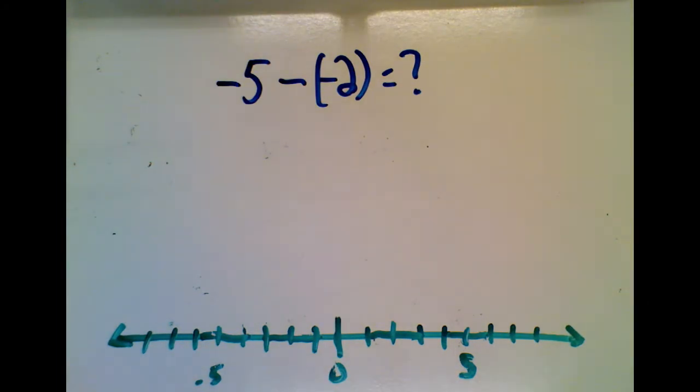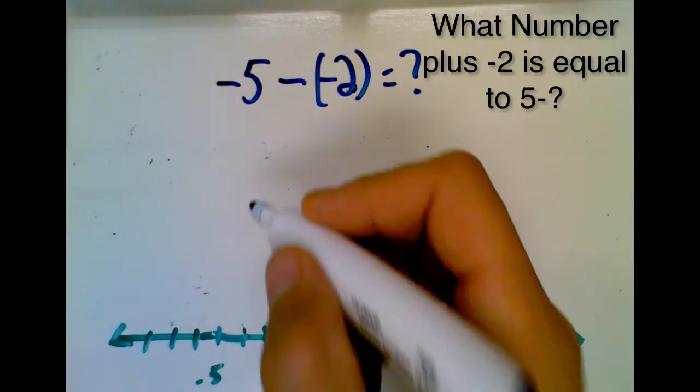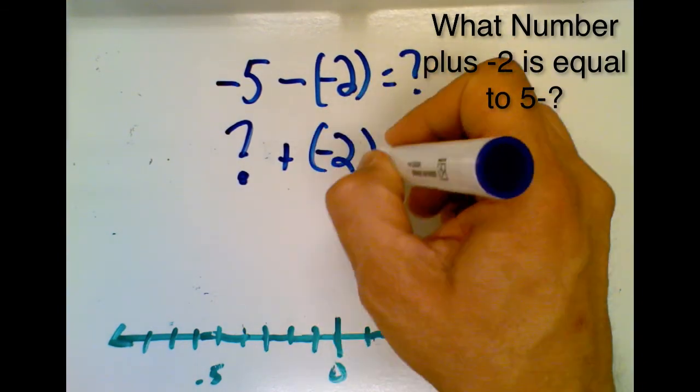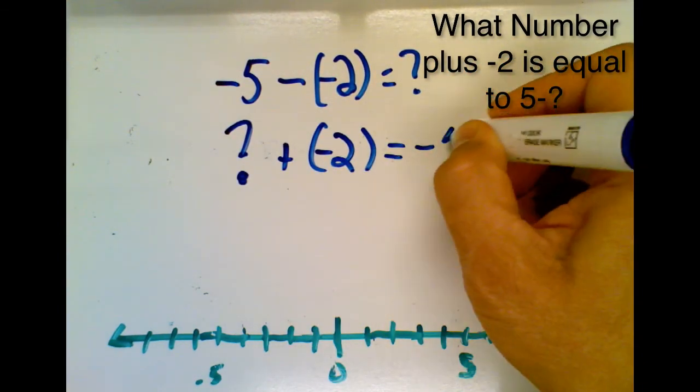And once again, we start by rearranging this as an addition problem and ask, what number plus negative 2 is equal to negative 5?